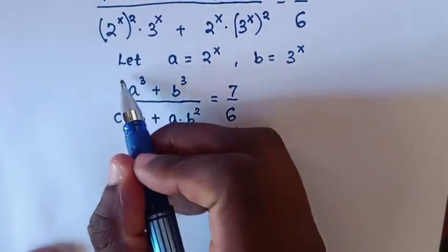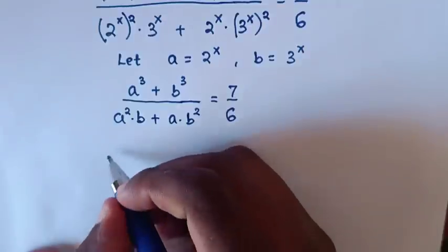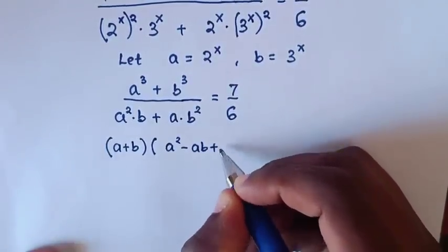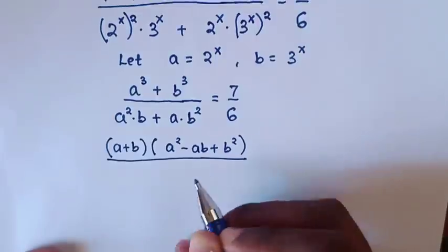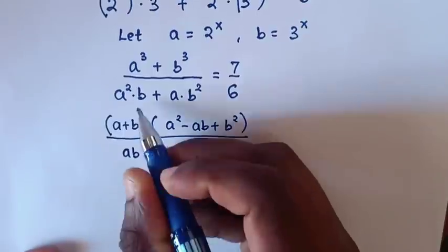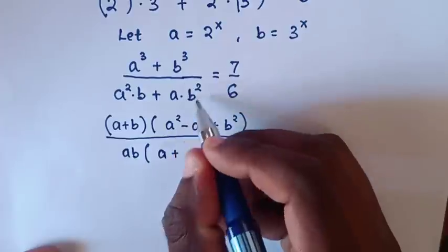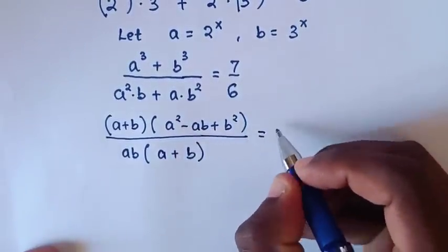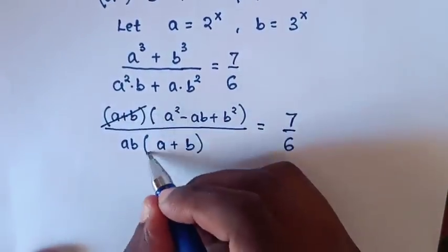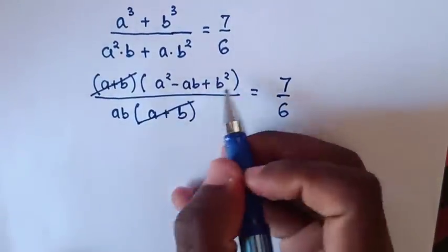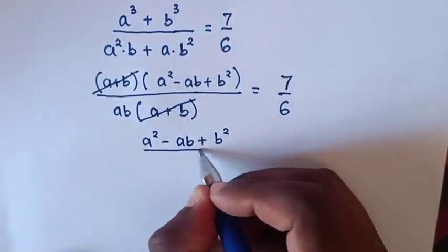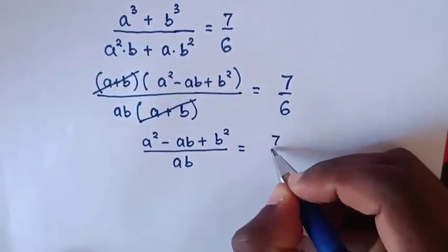Now, a^3 + b^3 factors as (a + b)(a^2 − ab + b^2). In the denominator, ab is common, so we factor it out: a^2·b + a·b^2 = ab(a + b). The (a + b) terms cancel, leaving (a^2 − ab + b^2) / (ab) = 7/6.